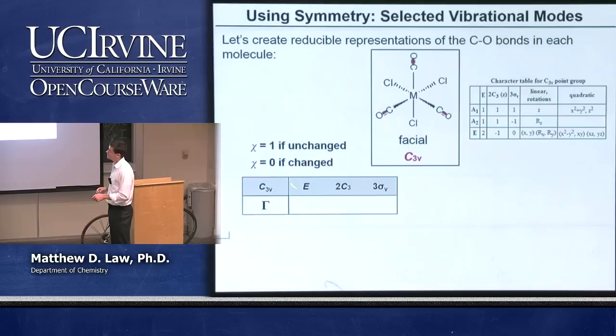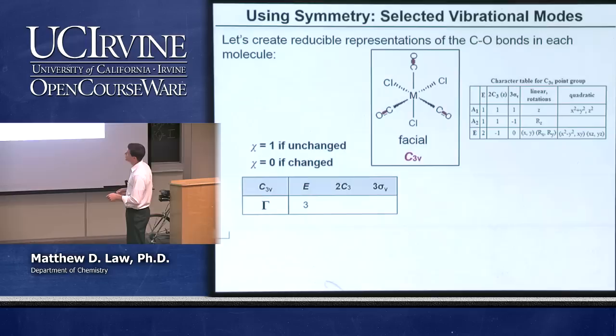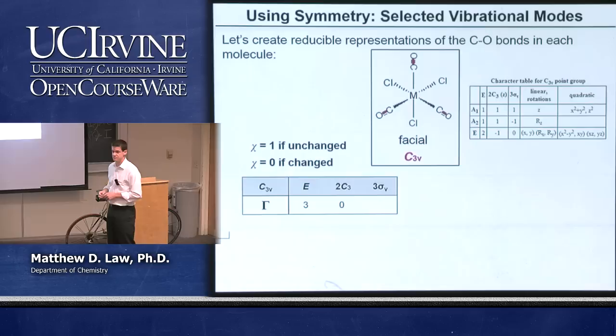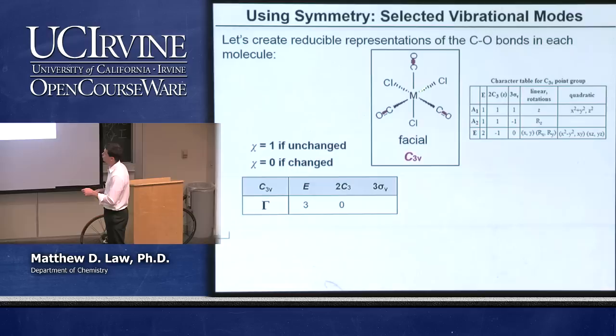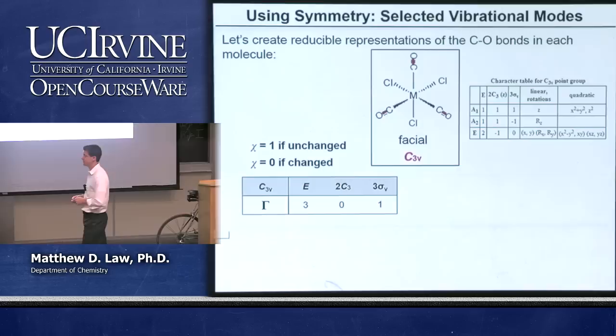We generate our reducible representation for these three CO vectors. Under the identity operation, nothing changes and we get a character of 3. Under a C3 operation — the C3 is coming out at you — we get a character of 0 because all the bonds change. And for one of the reflection planes, the reflection plane cuts through one of the CO bonds, giving a character of 1.